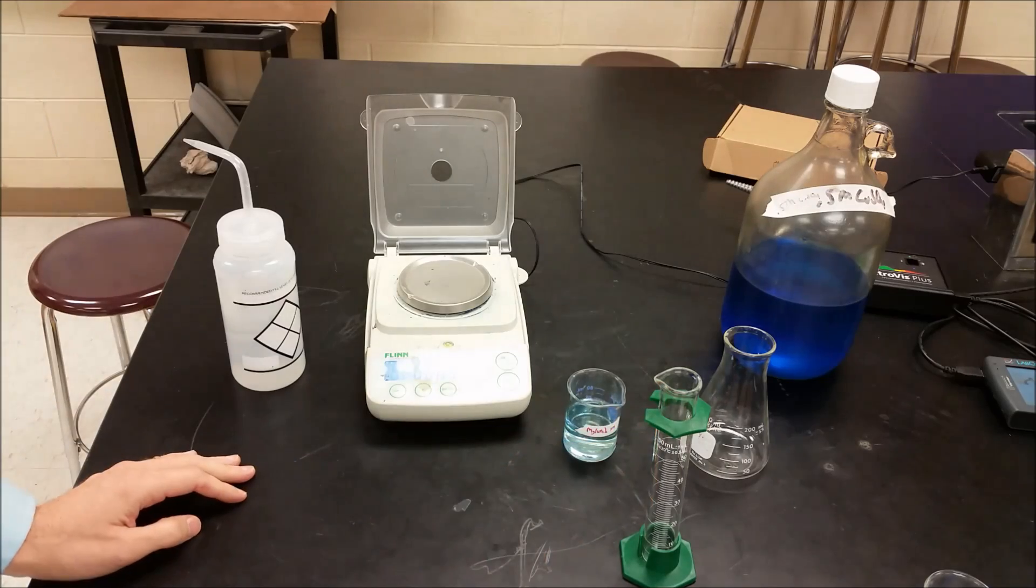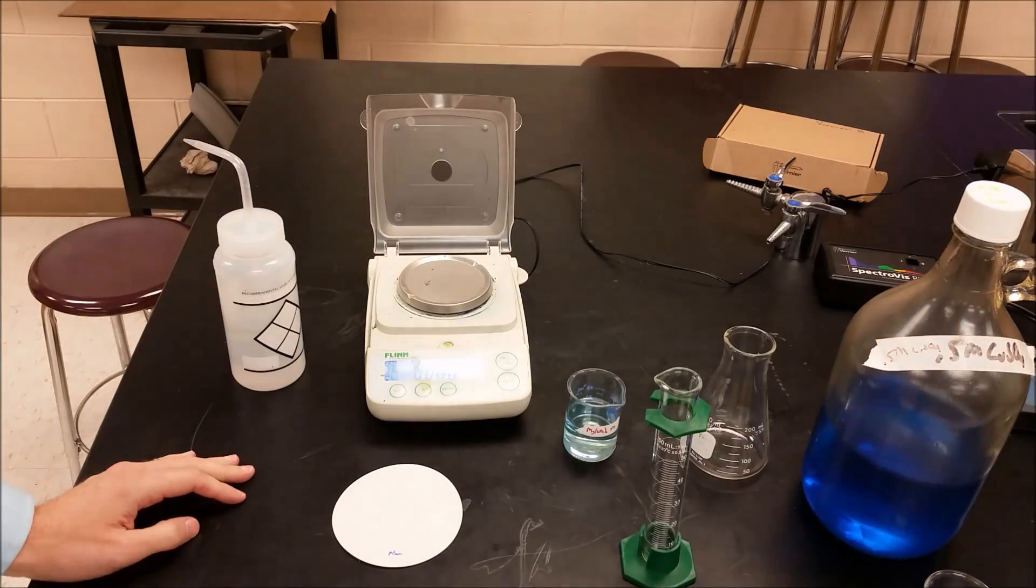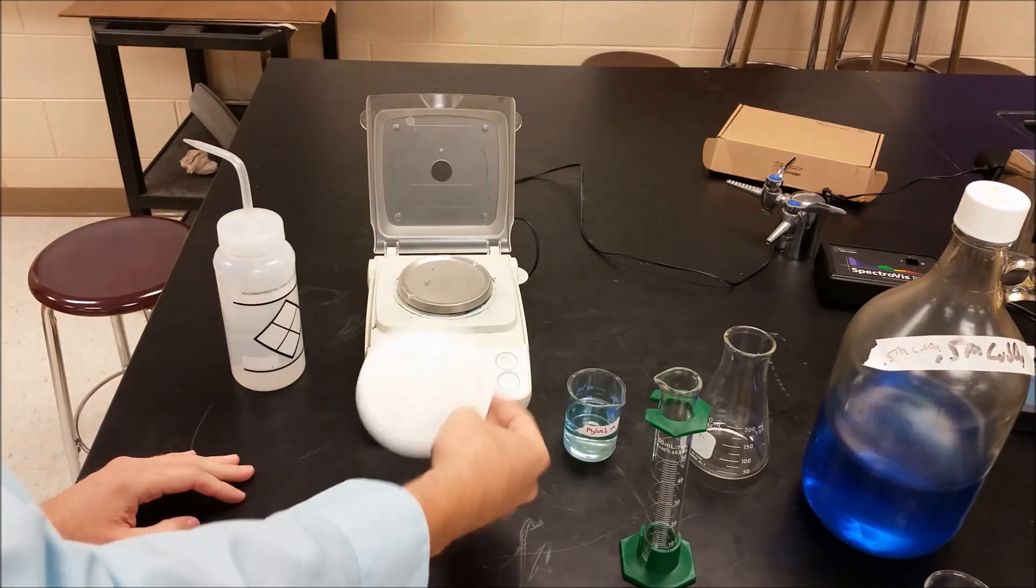One is we're going to do a gravimetric analysis. The other one is we're going to do an absorbance calibration curve using 0.5 molar copper(II) sulfate.